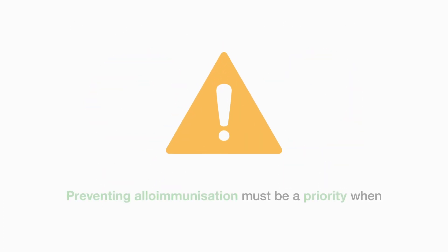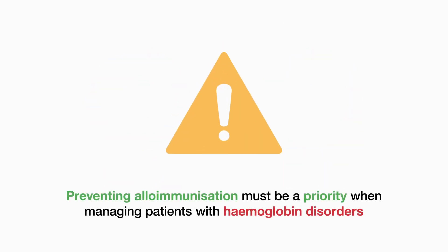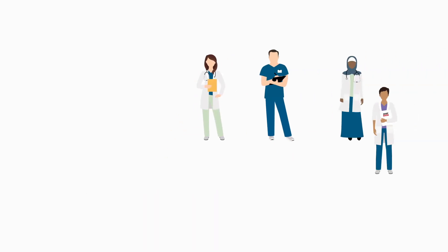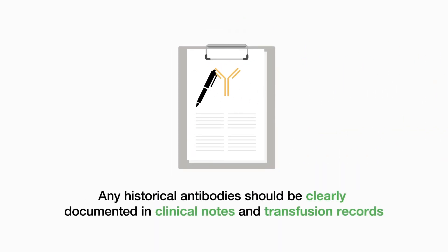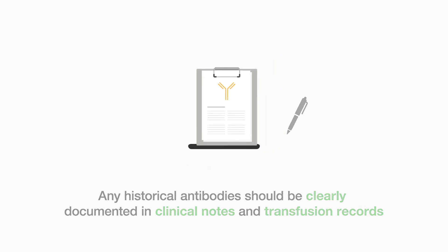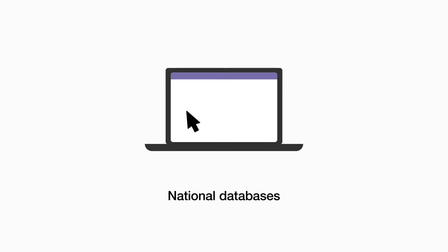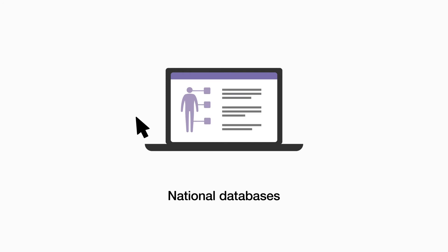Preventing alloimmunisation must be a priority when managing patients with haemoglobin disorders. All transfusions should have a clear indication and be authorised by a haematology team. Any historical antibody should be clearly documented in clinical notes and transfusion records, including national databases such as the Specialist Services Electronic Reporting using Sunquest Integrated Clinical Environment, known as SPICE, in England.